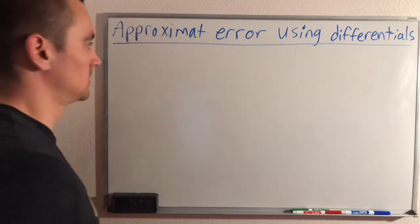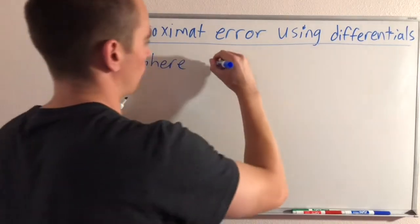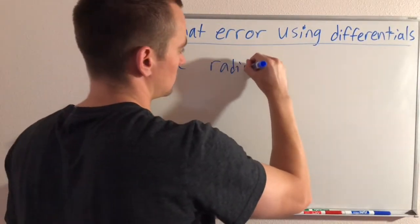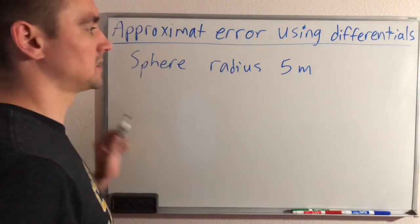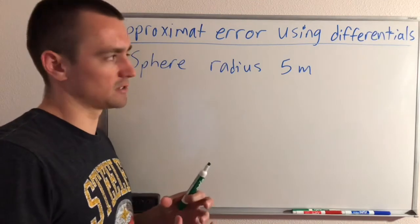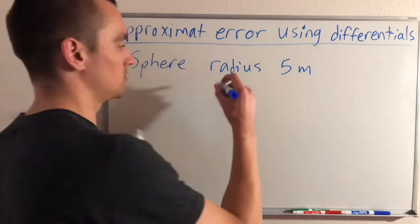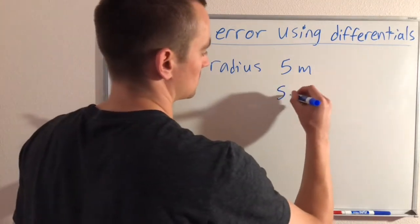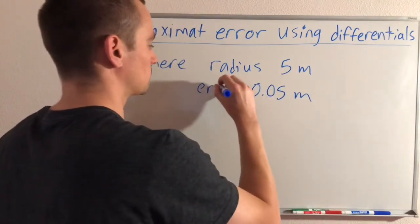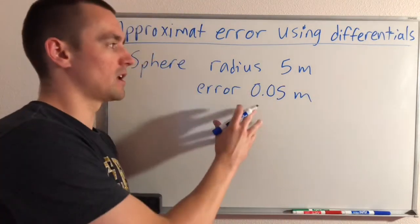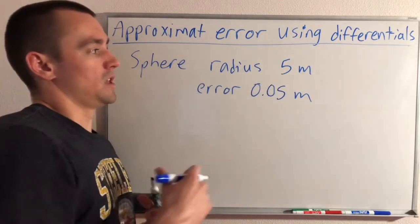The example I have today is let's say we have a sphere with a radius of five meters, and let's say we measured the radius of the sphere using some instrument that may have an error of up to five centimeters, which is 0.05 meters. So we know that our radius could be wrong by up to 0.05 meters—we think it's five meters but it could be off by a bit.